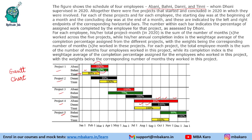We are given a few important data markings. For each employee, the total project month is the sum of the number of months the person worked across the five projects. For example, Abani worked for two months on one project, two months on another, and five months on another. So Abani's total project month is nine.